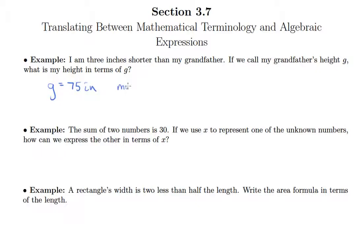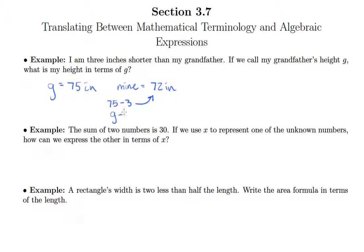My height would be three less — 72 inches. So how do I get from 75 to 72? I subtract three. I took 75 minus three and that's how I got 72. So if I use G instead of 75, I can just replace 75 with G and get G minus three.